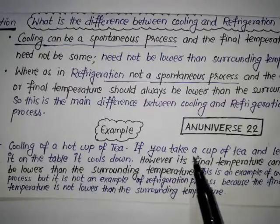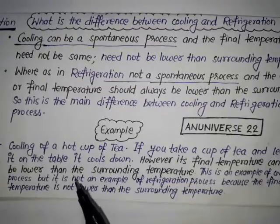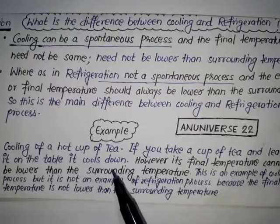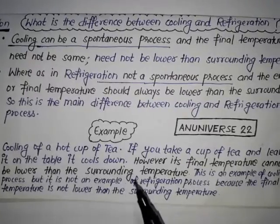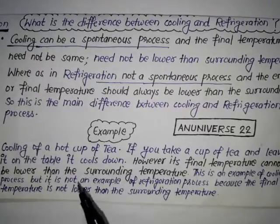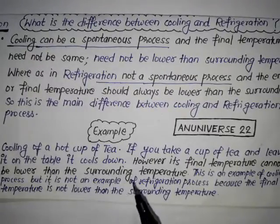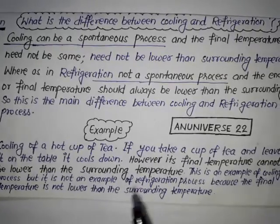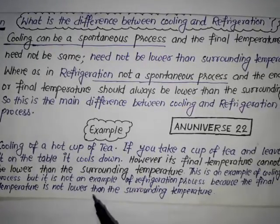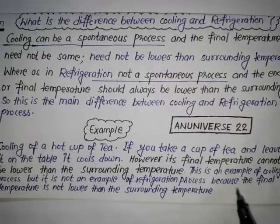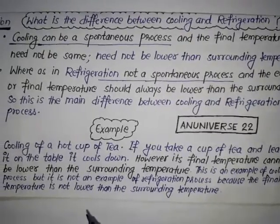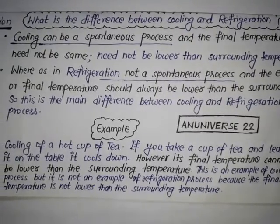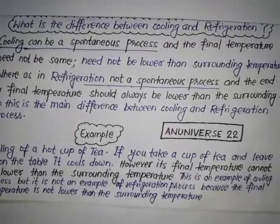Example of cooling: cooling of a hot cup of tea. If you take a cup of tea and leave it on the table, it cools down. However, its final temperature cannot be lower than the surrounding temperature. So this is an example of a cooling process, but it is not an example of refrigeration, because the final temperature is not lower than the surrounding temperature.